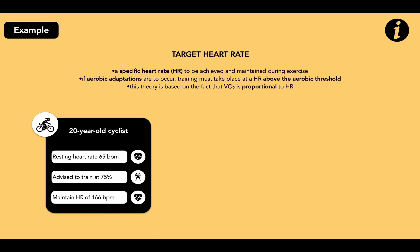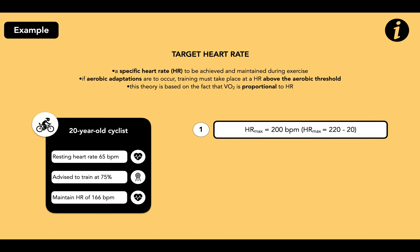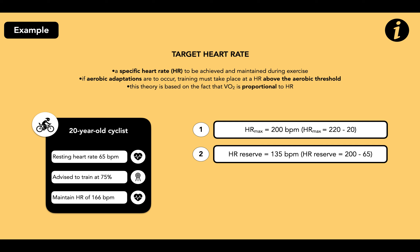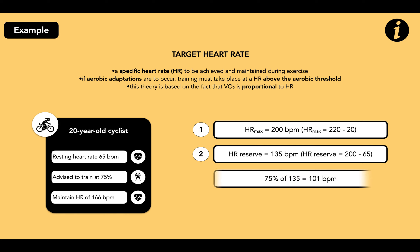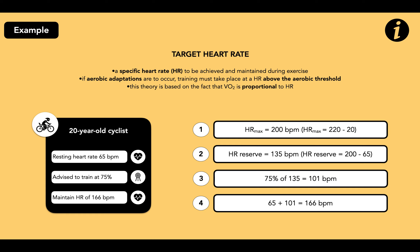Let's break down Karvonen's principle. Firstly, we need to know our heart rate max. Our cyclist is 20 years old, so 220 minus 20 gives us 200 beats per minute. Secondly, we need to know the heart rate reserve, which is maximum heart rate minus resting heart rate: 200 minus 65 gives a heart rate reserve of 135 beats per minute. We've been advised to train at 75% of the heart rate reserve, so 75% of 135 equals 101 beats per minute. Finally, we add this to the resting heart rate of 65, giving us 166 beats per minute.